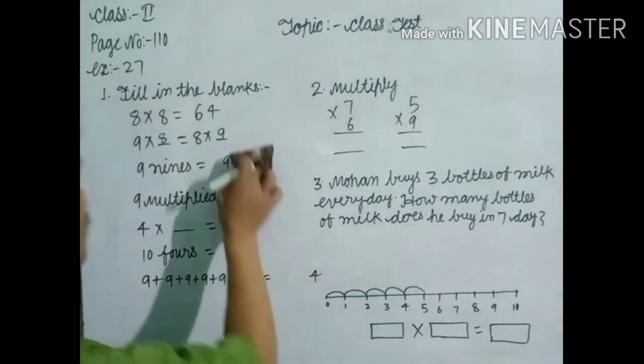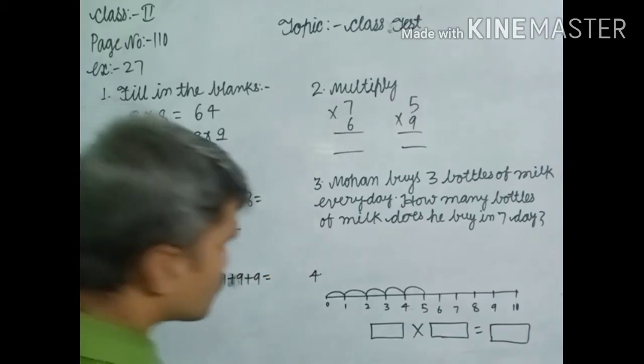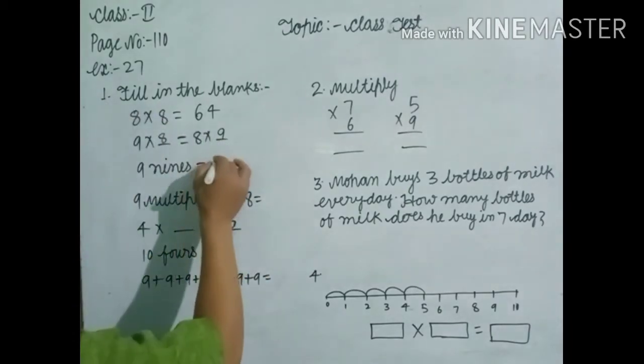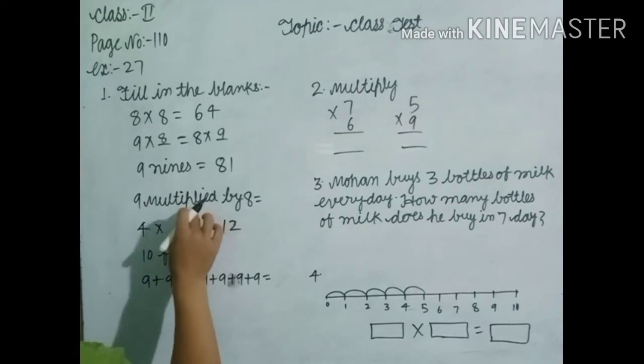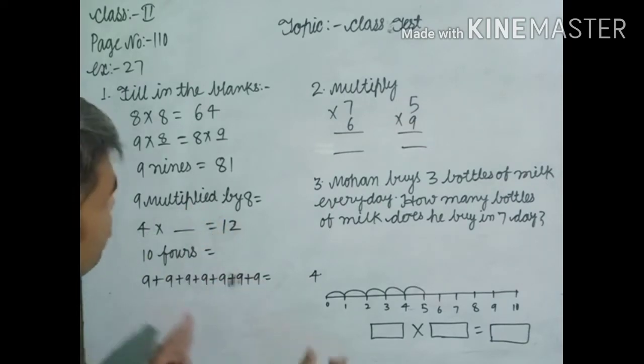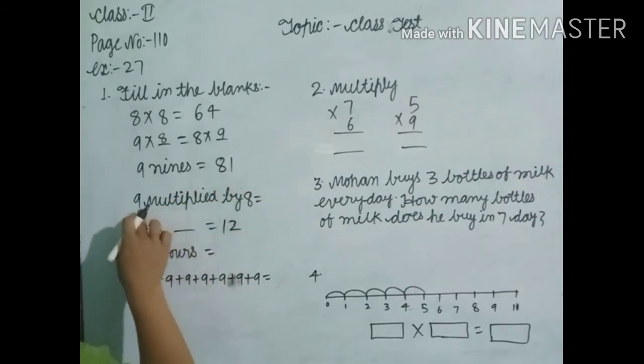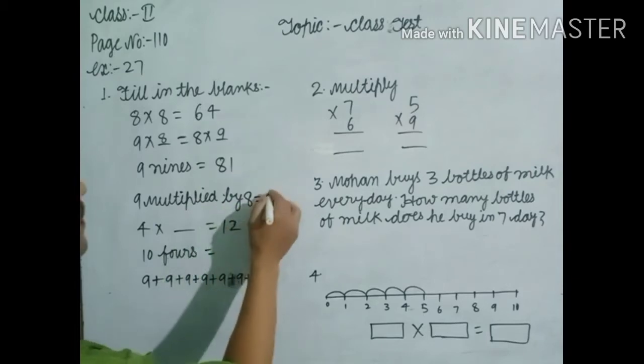9×9=81. Some students write 99, but dear students, this is multiplication form. 9 nines are 81. That means 9 multiplied by 8. But here it's not clear, so you understand: 9 nines are 81. 9 multiplied by 8 means 72 is the answer.